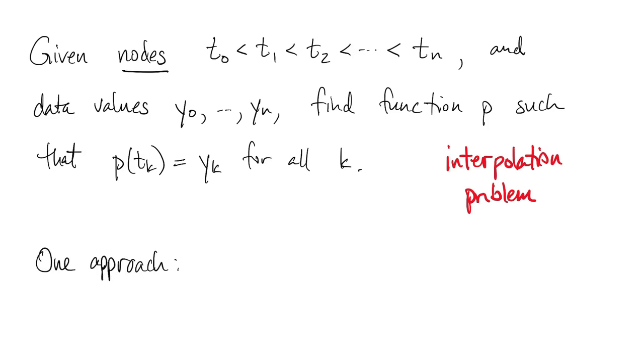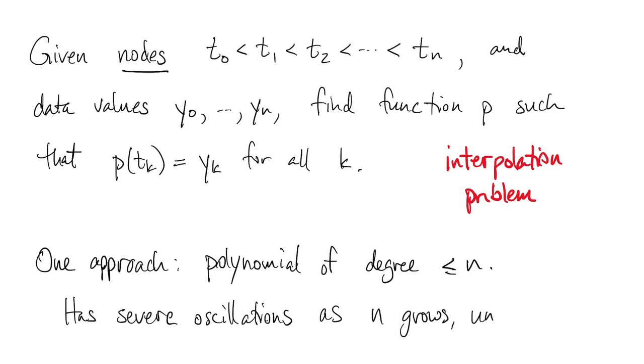The approach we took before was to choose a polynomial of degree n or less to interpolate the data, but these can have very large oscillations between the nodes unless we choose those nodes very specially. So we're going to look for alternatives.